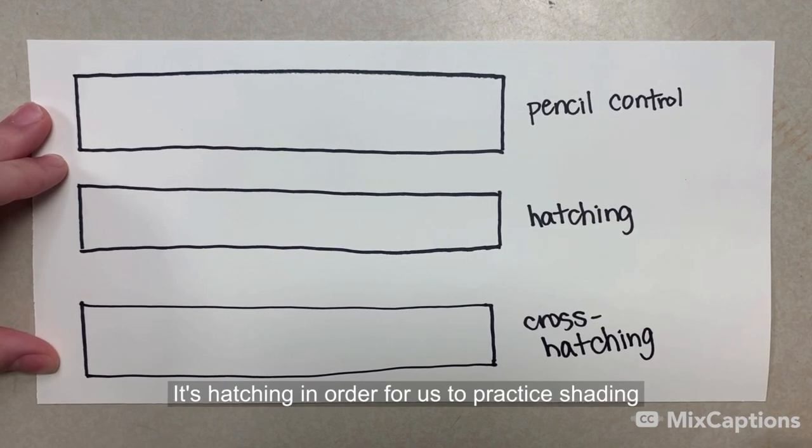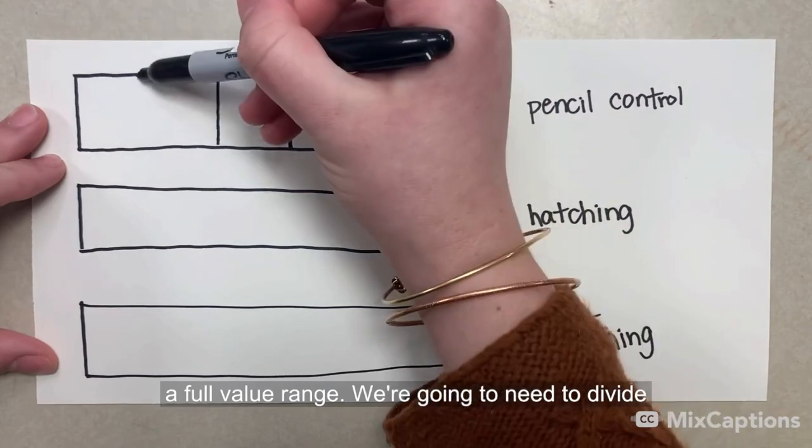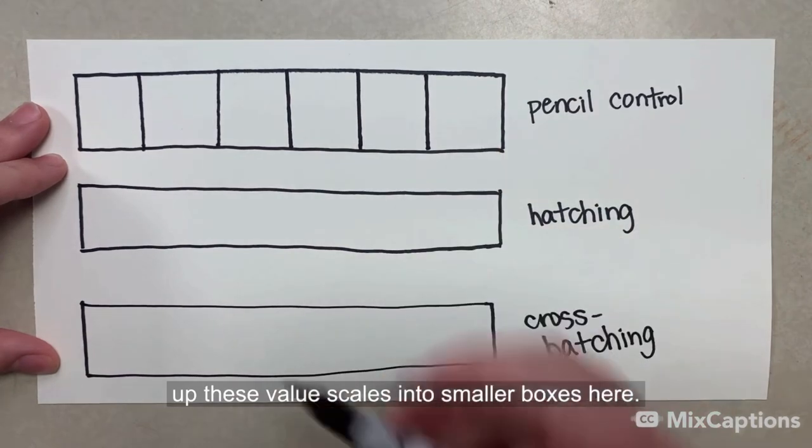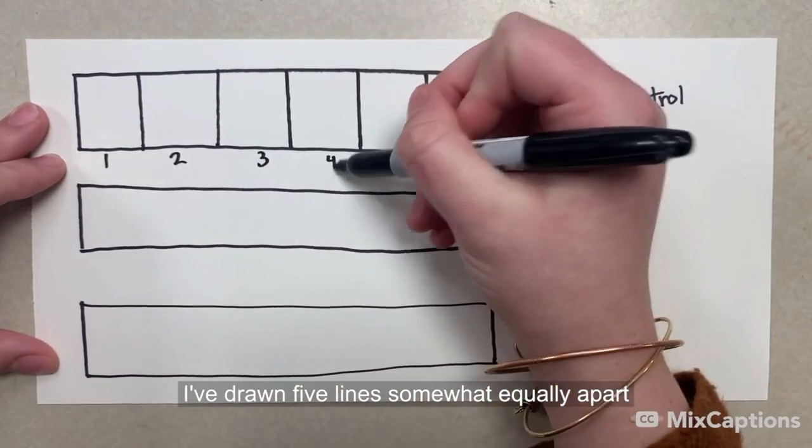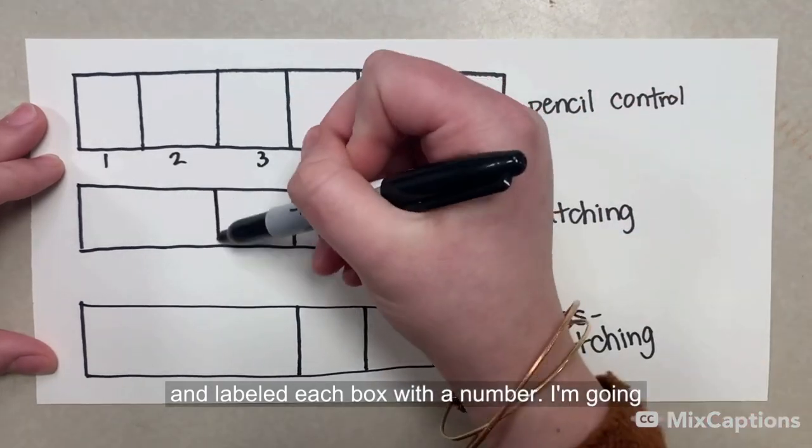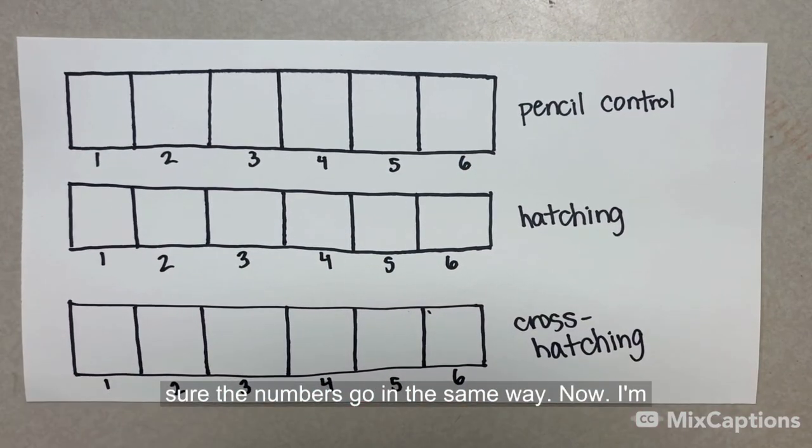In order for us to practice shading a full value range, we're going to need to divide up these value scales into smaller boxes. Here I've drawn five lines somewhat equally apart and labeled each box with a number. I'm going to do the same thing for these other boxes, making sure the numbers go in the same way.